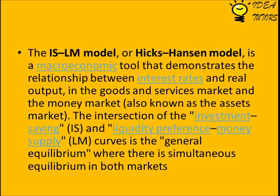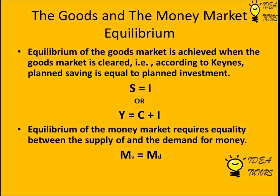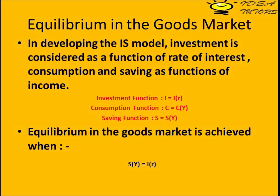Equilibrium of the goods market is achieved when the goods market is cleared — that is, according to Keynes, planned saving is equal to planned investment. Equilibrium of the money market requires equality between the supply and the demand for money. In developing the IS model, investment is considered as a function of the rate of interest, and consumption and saving as functions of income.